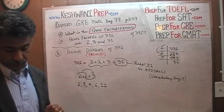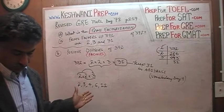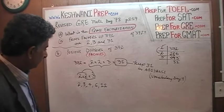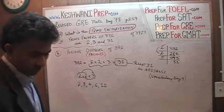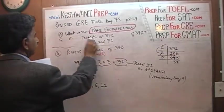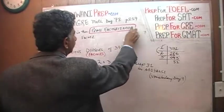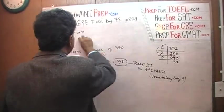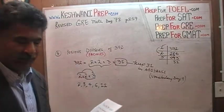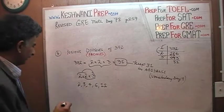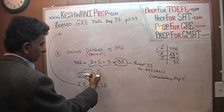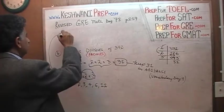Now we will worry about, now that we have the factors of 12, now all we have to do is to simply multiply each of these numbers by 31, and we are done.